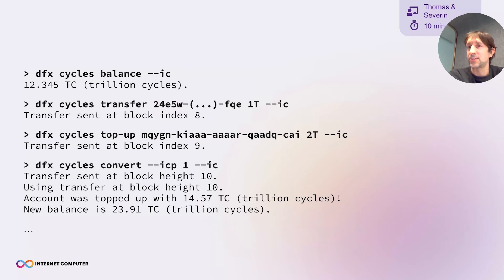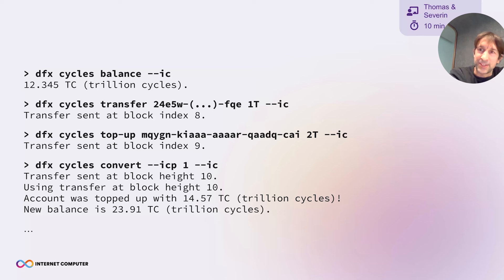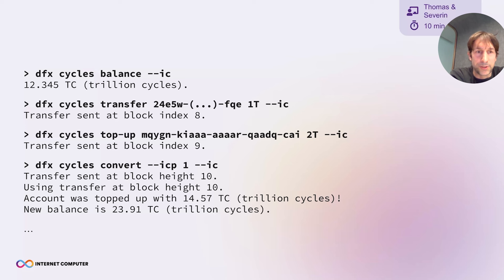Here are some example calls for straightforward actions a user might want to do. If you want to know your cycles balance, you run dfx cycles balance and it will tell you how many cycles you have. If a friend or co-worker needs cycles, you can easily transfer them with dfx cycles transfer, specifying the target and amount. If a canister is running low, you run dfx cycles top-up and provide the canister you'd like to feed with more cycles. If you're running low yourself, you convert ICP to cycles via dfx cycles convert, providing an ICP amount.